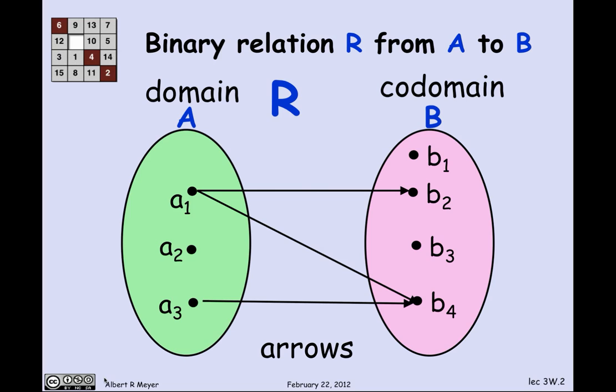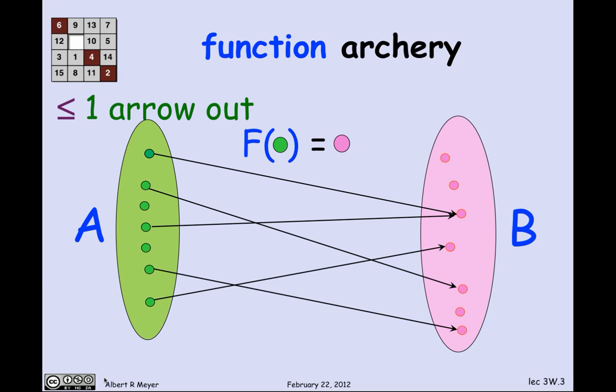A relation is a binary relation — it's a thing with three parts. It's got a domain illustrated as A, a codomain illustrated as B, and relationships — an association between domain elements and codomain elements indicated by arrows, with those arrows being called the graph of the relation. We already observed one aspect of archery and arrows: the concept of a function could be captured by saying that there was at most one arrow out of every element in the domain.